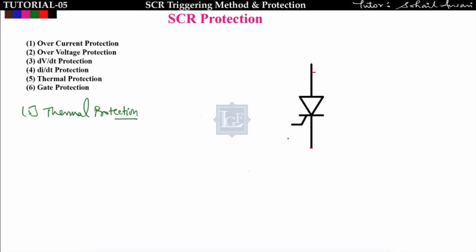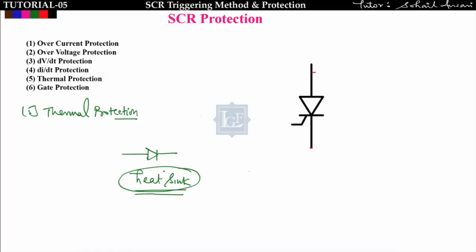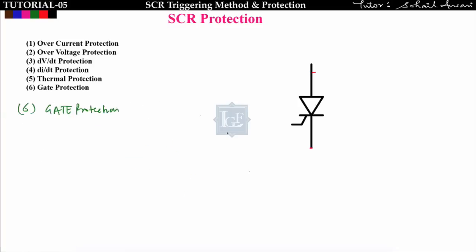The fifth is thermal protection. Since the SCR is designed to handle high voltage and current, significant power losses occur across it. A suitable heat sink is attached to the SCR so that its temperature does not exceed its rated capability.